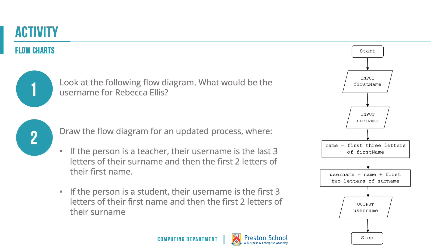Here is a slightly more exam-based scenario — a question from the OCR sample paper. Look at the following flow diagram: what would be the username for Rebecca Ellis? And for number two, draw a flow diagram for an updated process where the diagram checks the role of a person, and if they are a teacher creates the username from the last three letters of their surname and the first two letters of their first name, and if they are a student using the first three letters of their first name and first two letters of their surname.